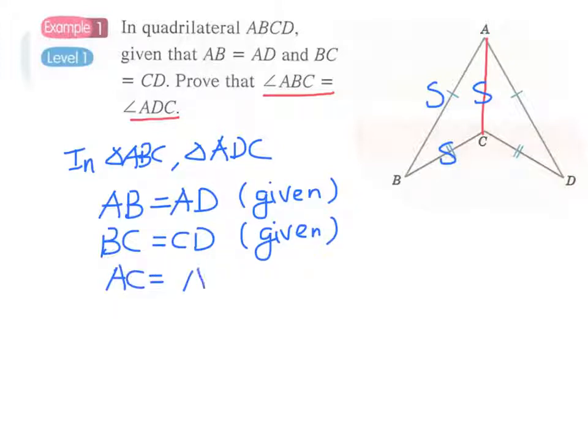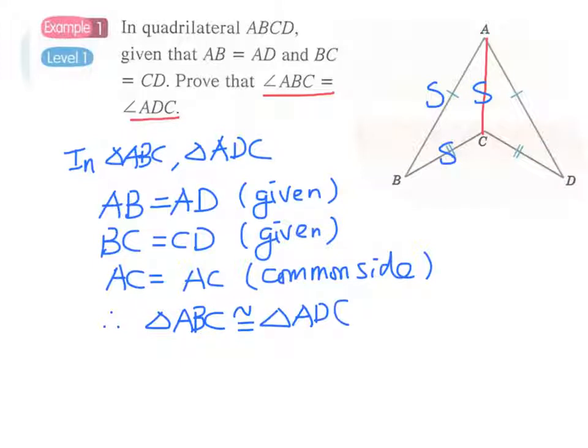And AC equals AC. We have a common side. And therefore, triangle ABC is congruent to triangle ADC. We have SSS.